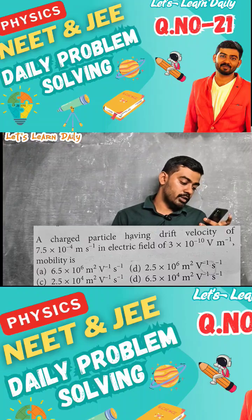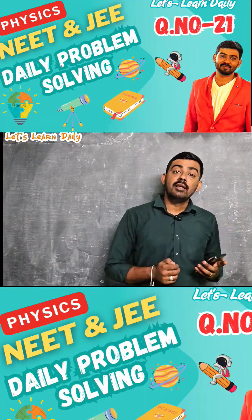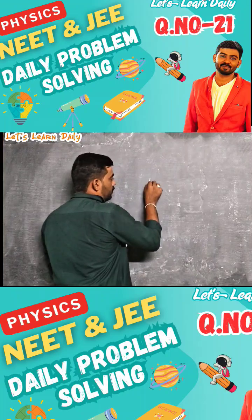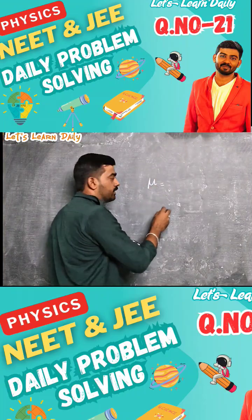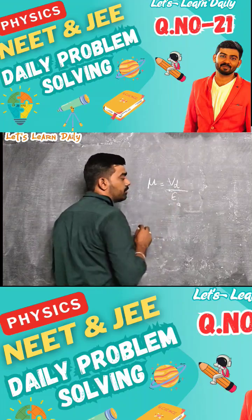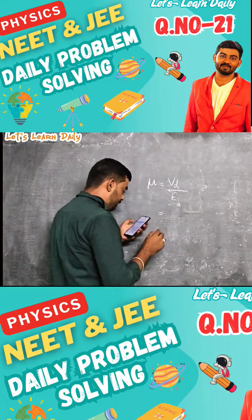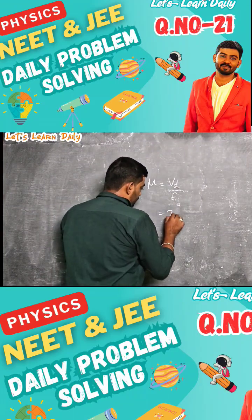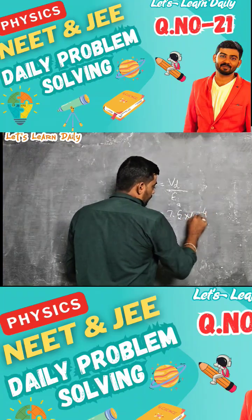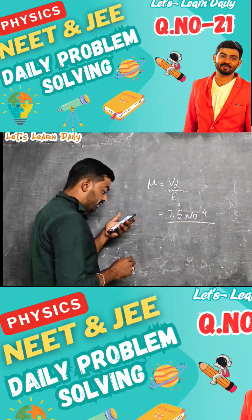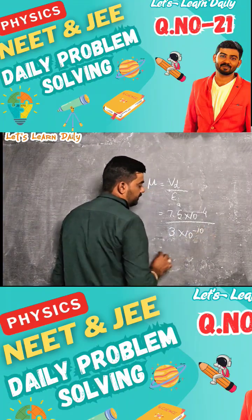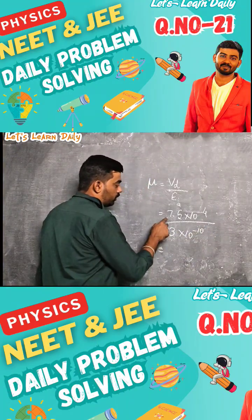We can get the drift velocity value and electric field value. Mobility mu is equal to vd divided by E. So we get 7.5×10⁻⁴ divided by the electric field value 3×10⁻¹⁰.